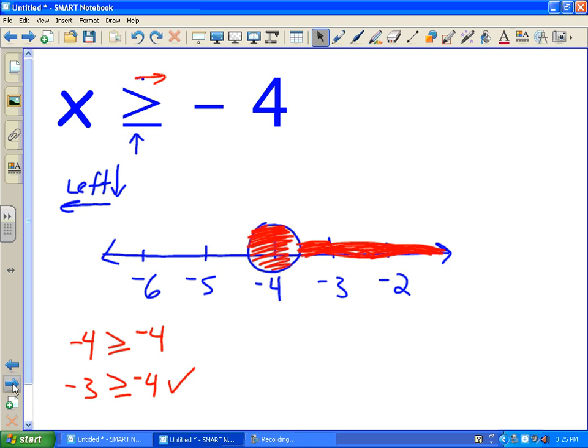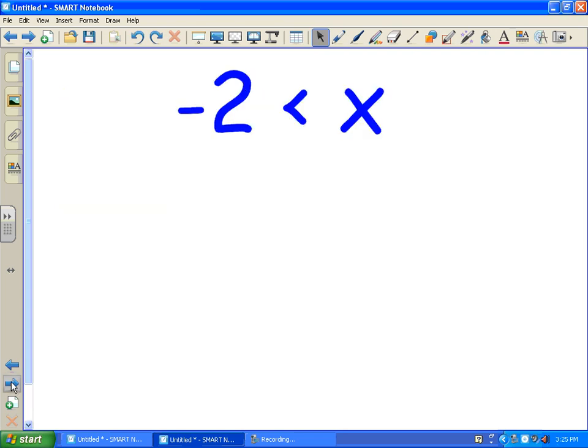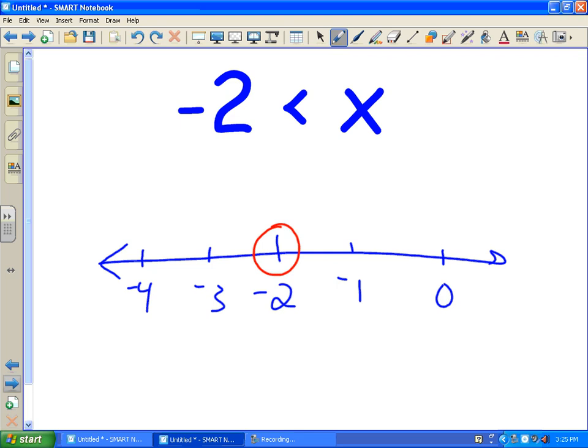Alright, let me throw one more at you here. So I got negative 2 is less than x. So this is a little different. So let's start by drawing our number line. And put negative 2 right in the middle. Then negative 1, 0, negative 3, negative 4. So there's my number. It's less than, so I can put an open circle around negative 2. Then we've got to figure out which way to shade.